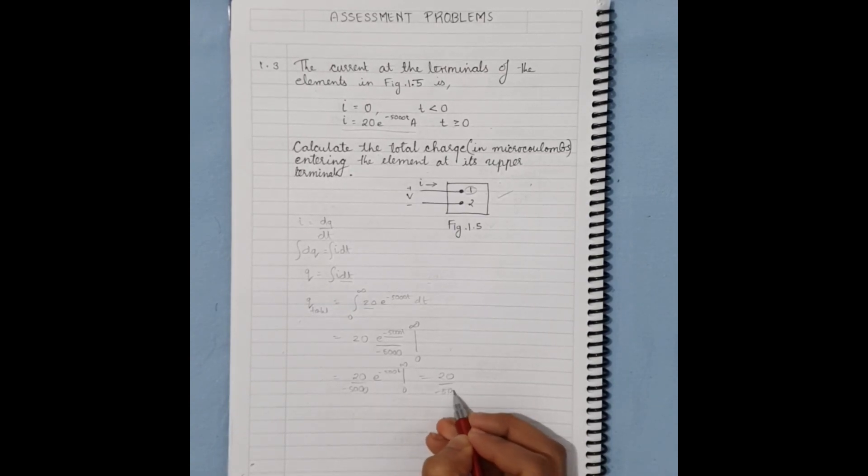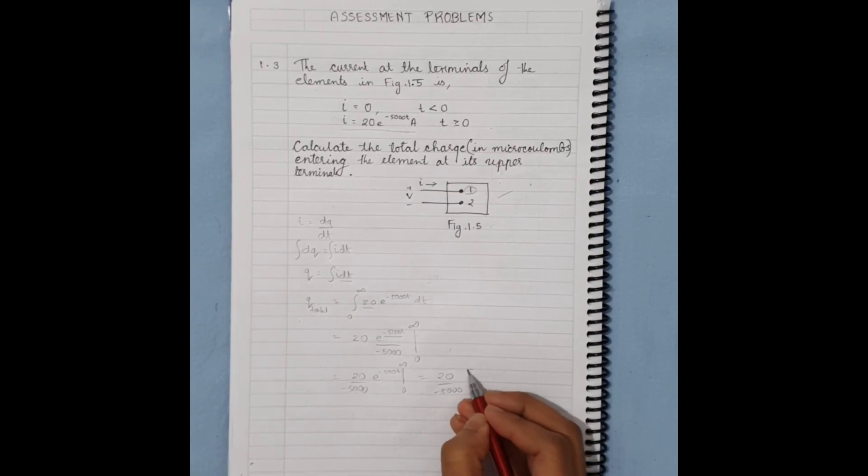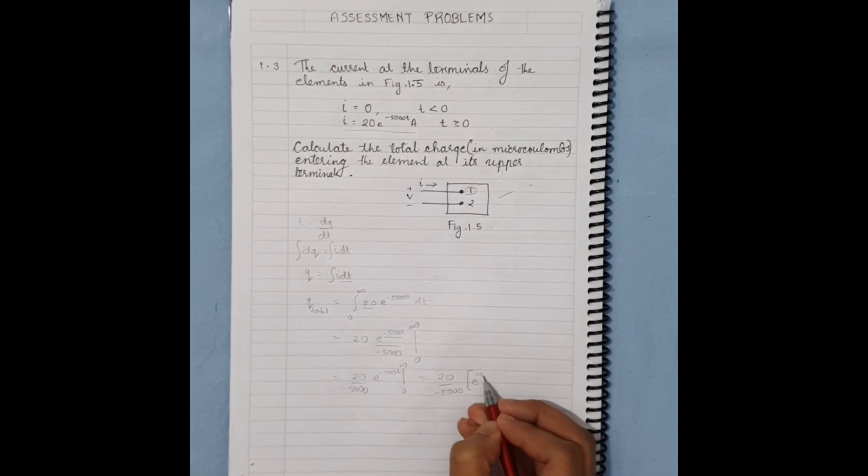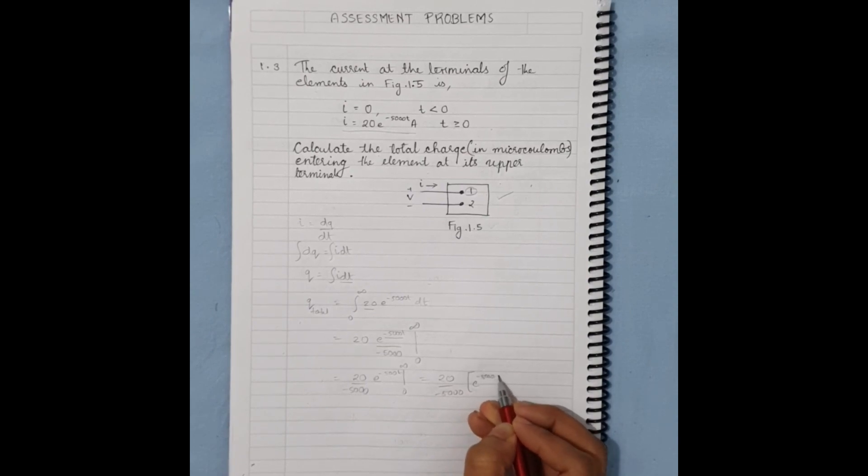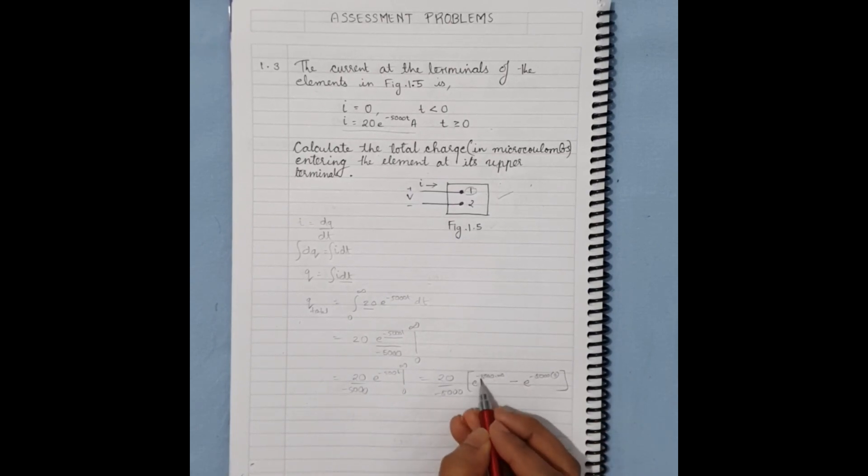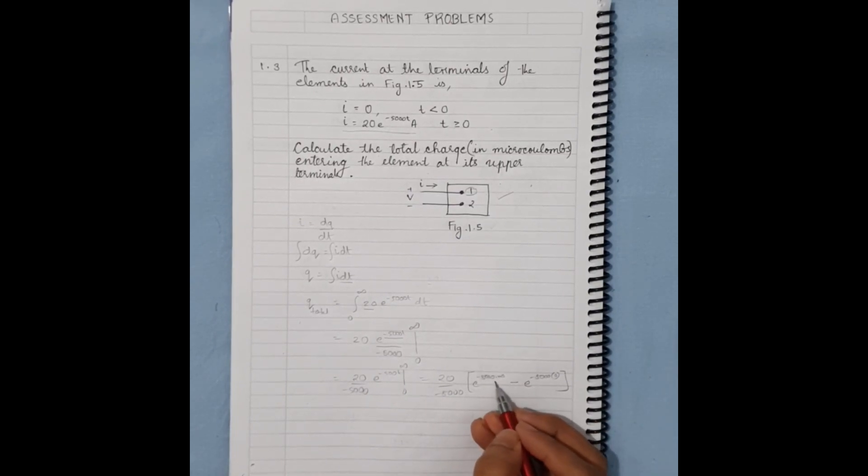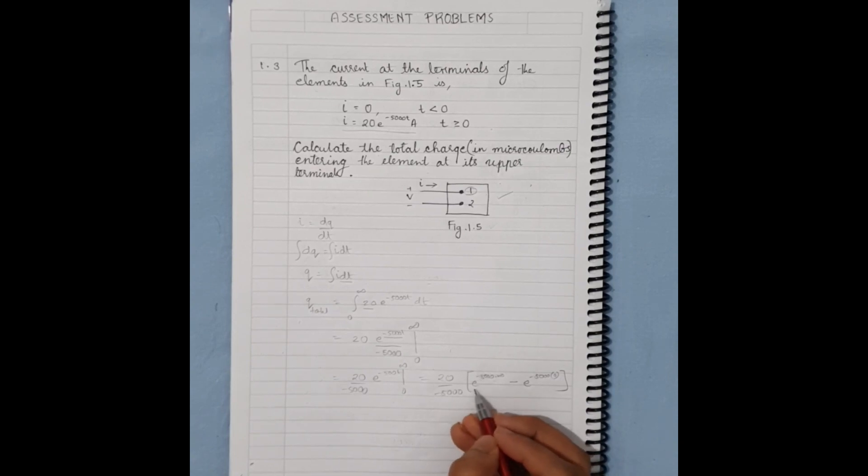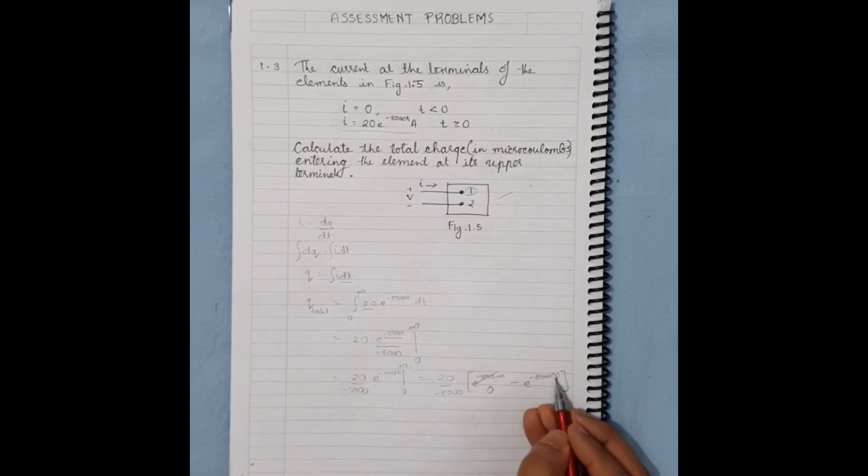This becomes (20/-5000) times [e^(-5000×∞) - e^(-5000×0)]. e^(-∞) becomes zero, and e^0 becomes 1, so we get (20/-5000) times (0 - 1), which is 20/-5000.